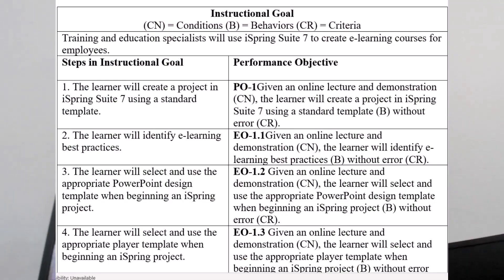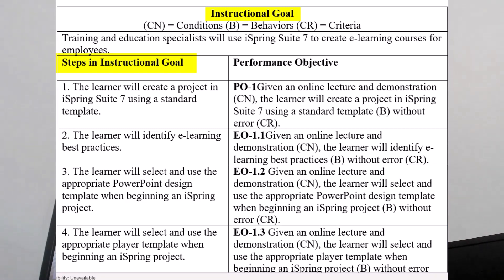And I want to show you this — this was something that I had to put together as part of following the Dick and Carey model. I had to identify an instructional goal, I had to put the steps to the instructional goal, and then as part of each performance objective I had to identify condition, behavior, and criteria.